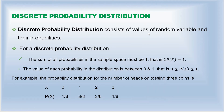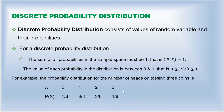A discrete probability distribution consists of the values of a random variable and their corresponding probabilities. In the discrete probability distribution, x — the random variable — will have discrete values like 0, 1, 2, 3, and so on, and you will have the corresponding probabilities for each. However, this will only be a discrete probability distribution if it satisfies two important conditions.